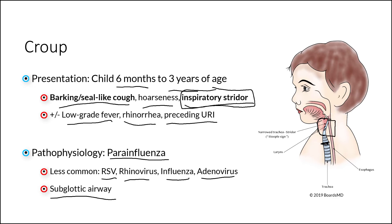This is what is ultimately going to lead to the extrathoracic obstruction, and classically is going to result in what is referred to as a steeple sign, which we will see in the coming slides on an x-ray. This is particularly high yield for croup and frequently shows up on examinations.